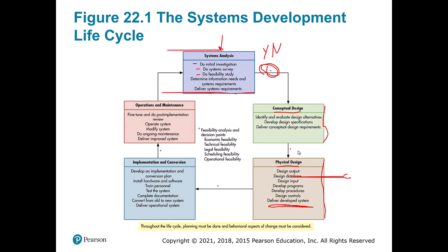Next, conceptual design — think of this as paper. Everything needs to be written down and designed: screens, reports, data diagrams, the database. Then physical design takes things from paper into code — actual reports built in a programming language, database work, input and controls. The key output of systems analysis is enough information for a go/no-go decision. The key output of conceptual design is a set of paper documentation or a plan. The key output of physical design is the actual developed system. Implementation and conversion means going live: making a plan, training people, installing hardware, buying servers, completing documentation, and executing the switchover. Finally, operations and maintenance covers fine-tuning and normal ongoing operations.